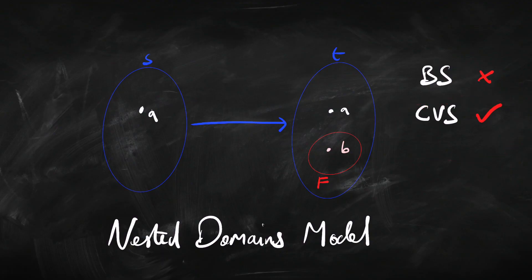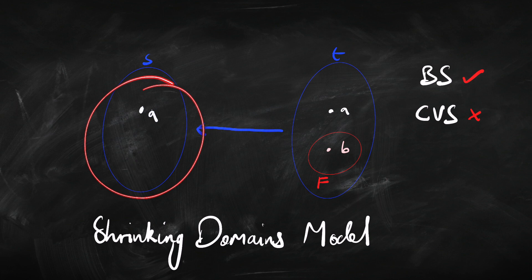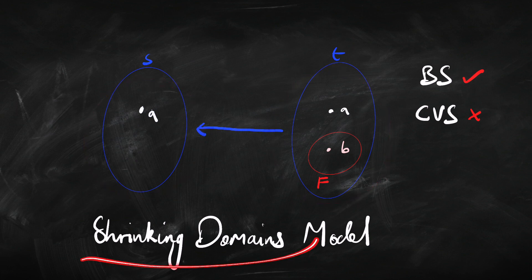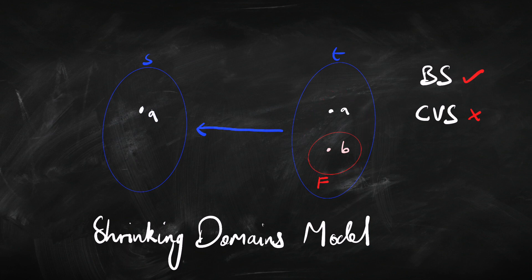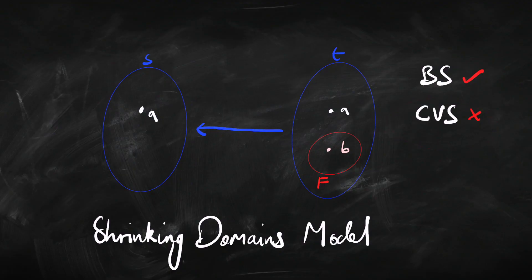In nested domain models, the Barcan sentence isn't going to be valid — we can find a model that makes it false. But the converse Barcan sentence will be valid in nested domains models. If we flip the arrow the other way, we get a shrinking domains model: two things in one world, but following the arrow we end up with just one thing. In the class of all shrinking domain models, the Barcan sentence is valid — true in all worlds — but now the converse Barcan sentence isn't valid.